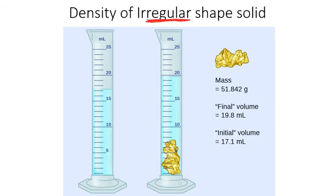If we have a regular shape solid, you have mass and volume and can easily plug them into the equation and calculate density as mass over volume.